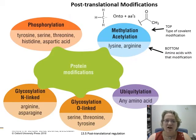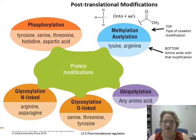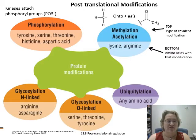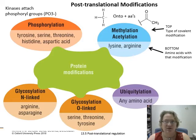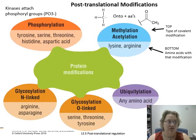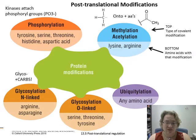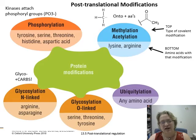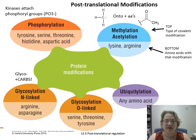Starting off, we've got methylation — adding methyl groups — and acetylation — adding acetyl groups — and those occur on the positively charged amino acids lysine and arginine. Next, we have phosphorylation, which is done by kinases — they attach phosphoryl groups to particular amino acid residues, and there are a huge number of different kinases. We also have two different types of glycosylation, which means adding a carbohydrate. You can either have those linked to an N-group on arginine or asparagine, or linked to an O-group on serine, threonine, and tyrosine.